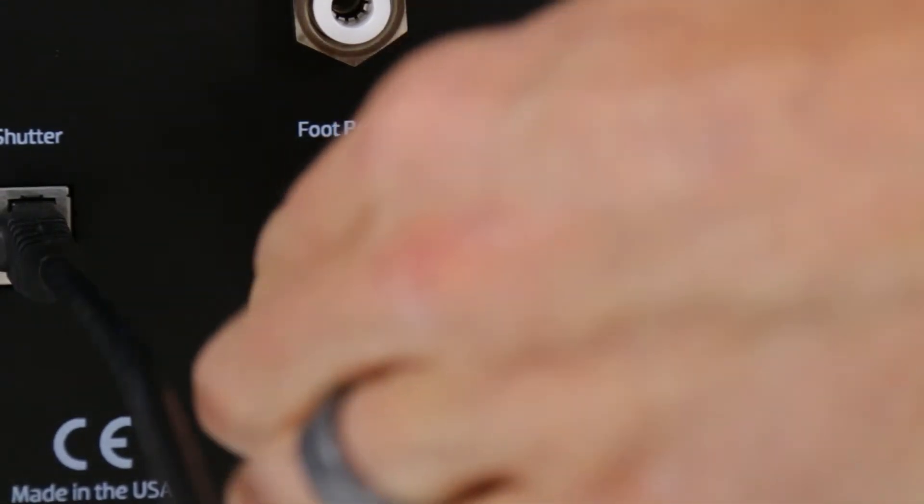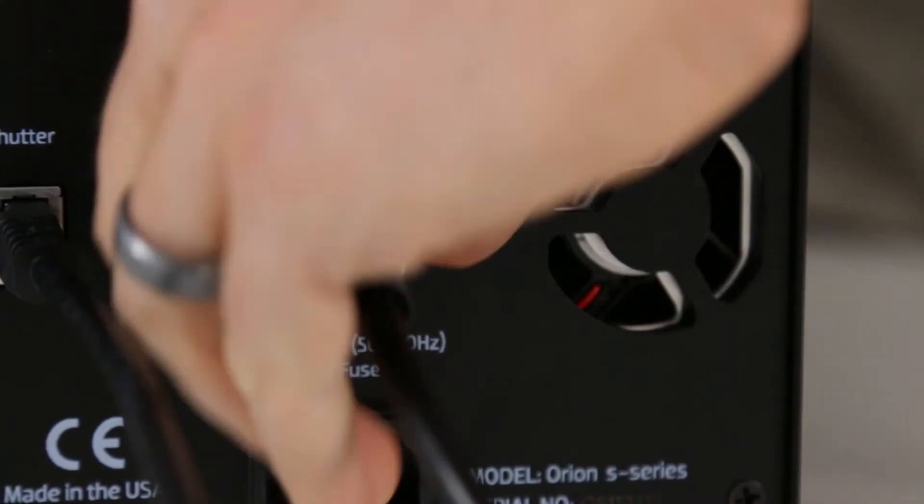Connect the foot pedal into the port marked foot pedal on the back of the welder. Tighten to secure in place.